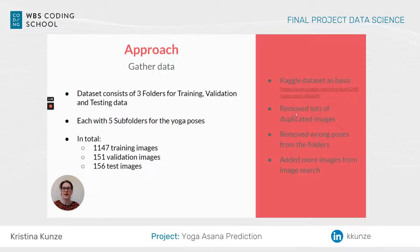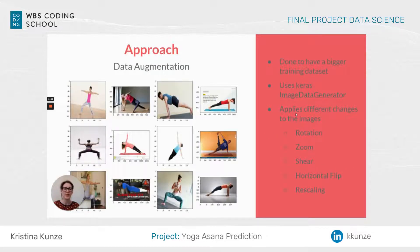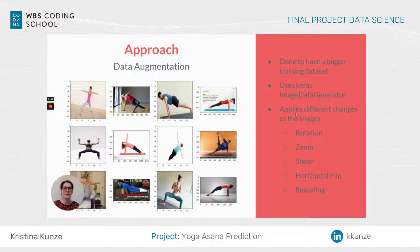In total, I had approximately 1,500 images, but it's not a really big dataset. So I used a data augmentation technique to have a bigger training dataset. When training my model on the fly, the image data generator provides changed images — like rotated, zoomed, or flipped images — so that I have a bigger dataset for training.